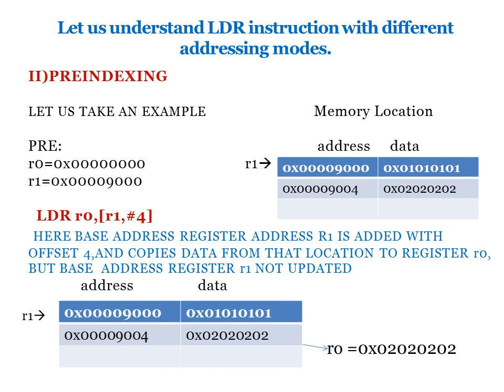The next addressing mode is pre-indexing — with no exclamation mark. The instruction is LDR R0, [R1, #4]. R1 initially points to 9000, offset 4 is added so it goes to memory location 9004, and the data 02020202 is copied into R0. But the base address R1 is not updated because there is no exclamation mark. That is what pre-indexing means.